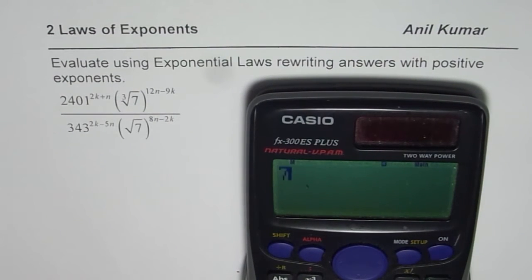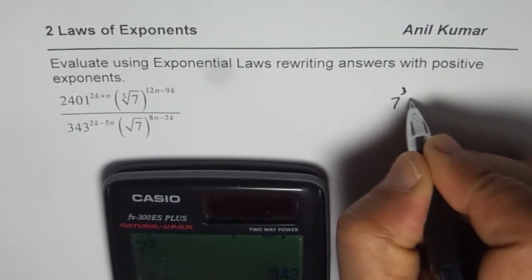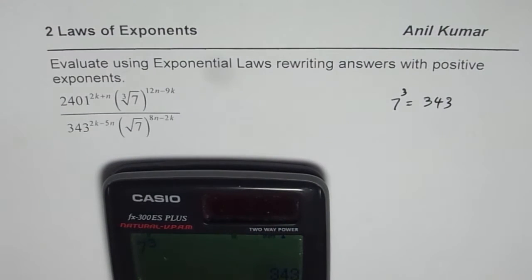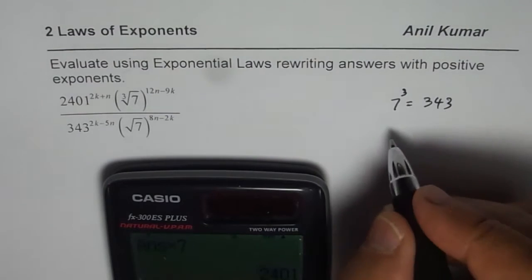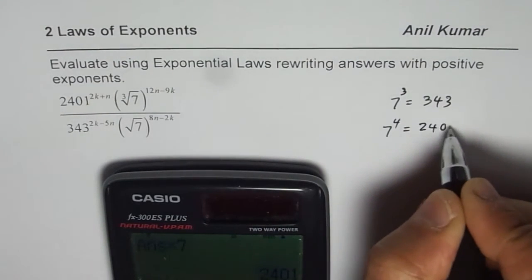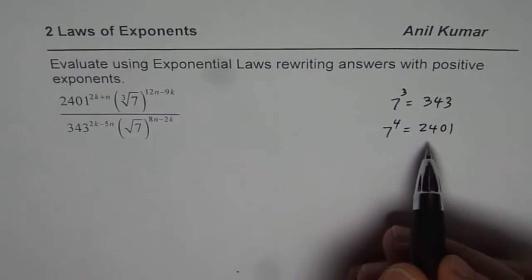So let's try, 7 to the power of 3 for example is how much? 343. So we got the first one, so we know 7 to the power of 3 is 343. Okay, let's see what is times 7. So that is 7 to the power of 4, which is 2401. So 7 to the power of 4 is 2401. Now that really helps us, right?